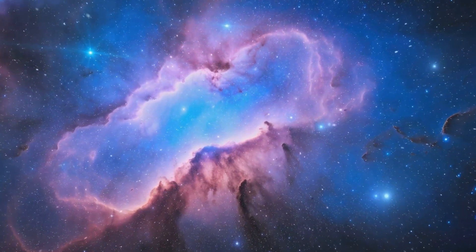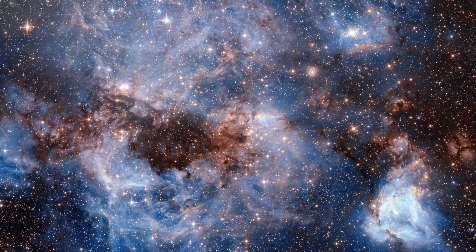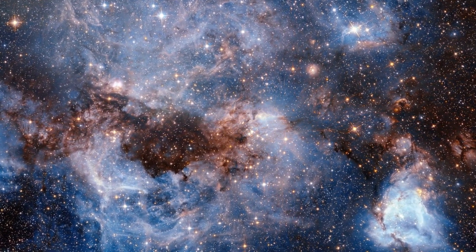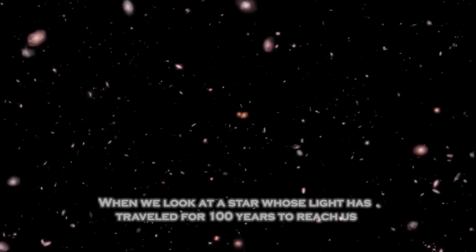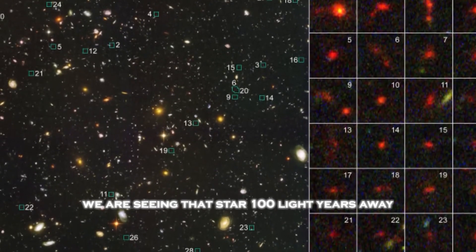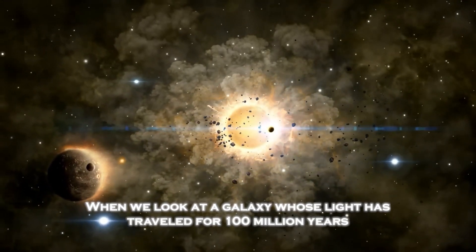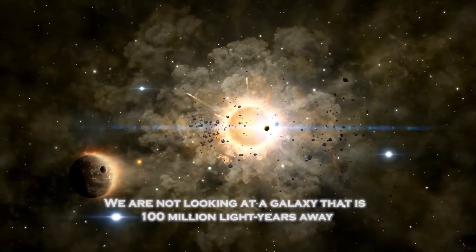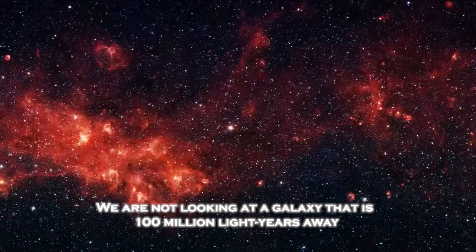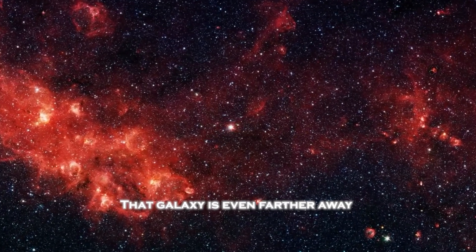As time goes on, galaxies are moving away from us at an ever-increasing speed, becoming unreachable even if traveling at the speed of light. When we look at stars whose light has traveled for a hundred years to reach us, we are seeing that star a hundred light years away. However, when we look at a galaxy whose light has traveled for a hundred million years, we are not looking at a galaxy that is a hundred million light years away. In fact, that galaxy is even farther away.